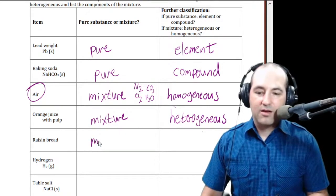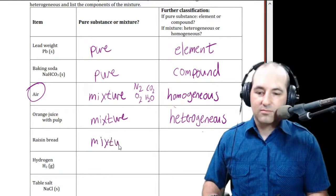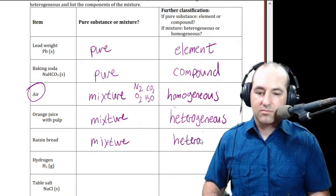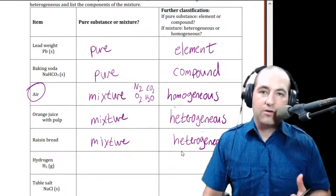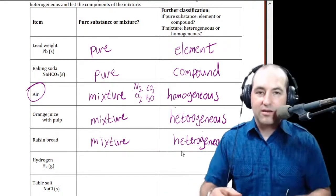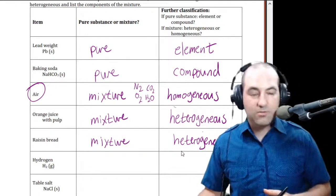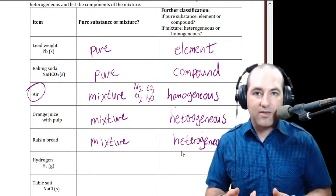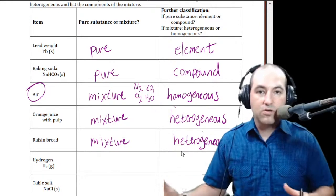Raisin bread — again made of lots of stuff. These kinds of things could potentially go either way depending on your experience. When I think of raisin bread I think of bread with raisins in it, but maybe there's a raisin bread where everything gets blended together and baked — that would be more of a homogeneous mixture because it would be uniform throughout. So a little bit depends on your experience.